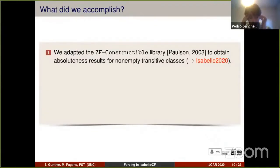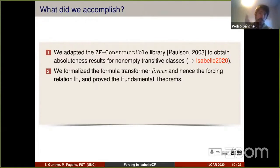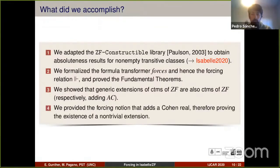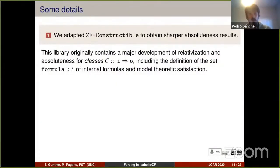It should be noted that none of those three frameworks will ensure or provide finitary consistency proofs of the relative consistency of ZFC plus CH. What did we do here? We took the constructibility library by Paulson and enhanced several results there, and this is already in Isabelle 2020 distribution. We formalized forces, the formula transformer, also and from this the forcing relation, and proved the fundamental theorems of forcing. We showed that generic extensions of models of ZF are also models of ZF, and respectively adding the axiom of choice. Finally we gave an example of a proper extension.